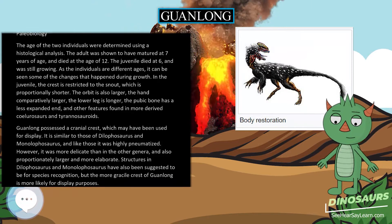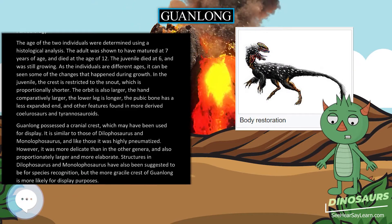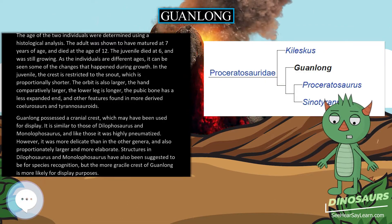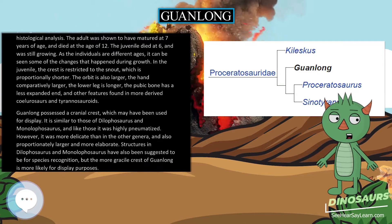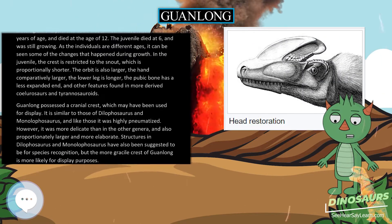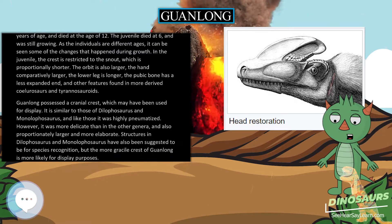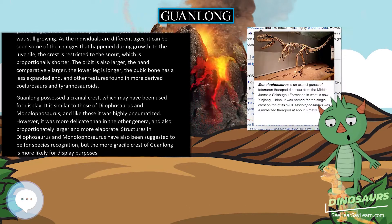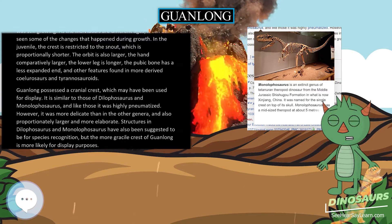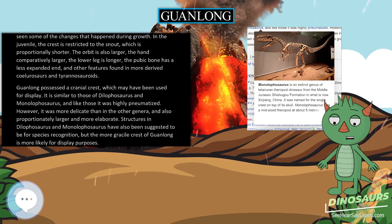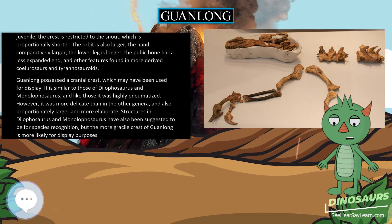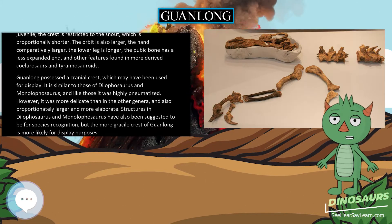Guanlong possessed a cranial crest which may have been used for display. It is similar to those of Dilophosaurus and Monolophosaurus, and like those it was highly pneumatized; however, it was more delicate than in the other genera, and also proportionately larger. Elaborate structures in Dilophosaurus and Monolophosaurus have been suggested to be for species recognition, but the more gracile crest of Guanlong is more likely for display purposes.